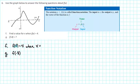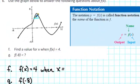So for part f, when we're asked to find a value for x when f of x is equal to 4, we're really trying to find an input when the output is equal to 4. So the first thing that we'll do on our graph is to locate an output value of 4 along the y axis.